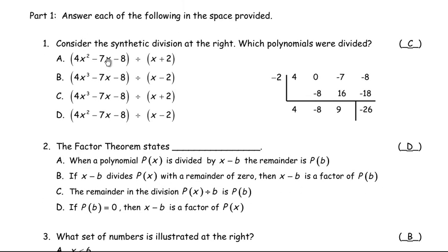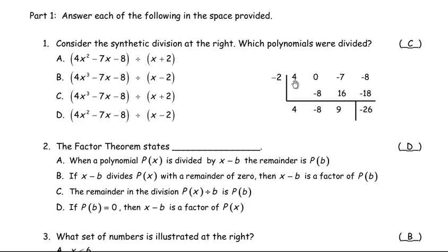In part one, the very first question says: consider the synthetic division at the right — which polynomials were divided? If you look at the numbers across the top row, those are the coefficients of the polynomial in ascending order from right to left. The negative eight is the constant, negative seven is the coefficient of x, zero is the coefficient of x squared, and four is the coefficient of the x cubed term. So the polynomial being divided is 4x cubed minus 7x minus 8.